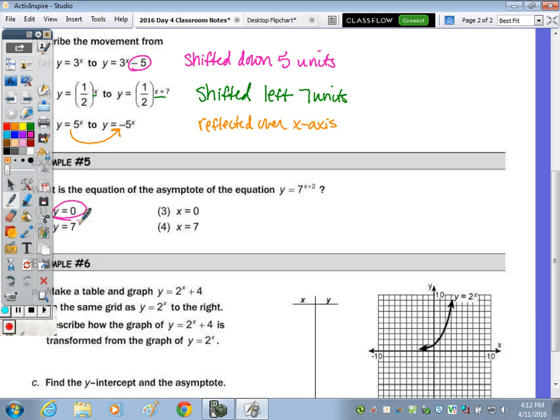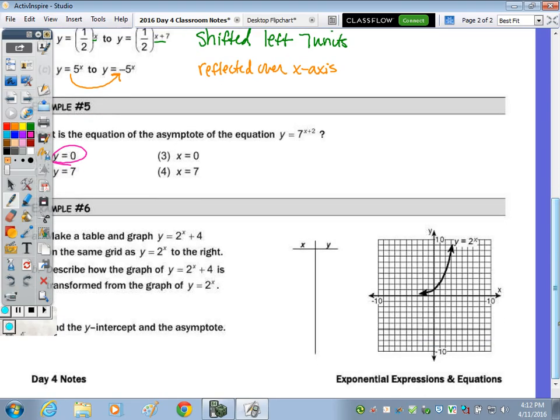Last one, example number 6. We're going to make a table and graph y equals 2 to the x plus 4. I'm going to use negative 3 to 3 for my values. Our y values are 4.125, 4.25, 4.5, which makes sense because it's going up 4 units from 0, 1. And 1 plus 4 is 5, then 6, 8, and 12.